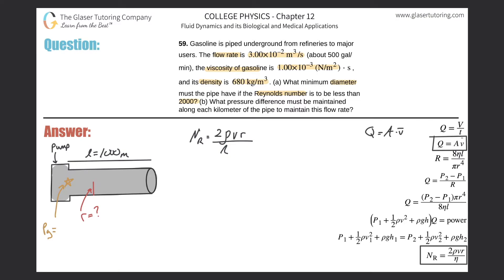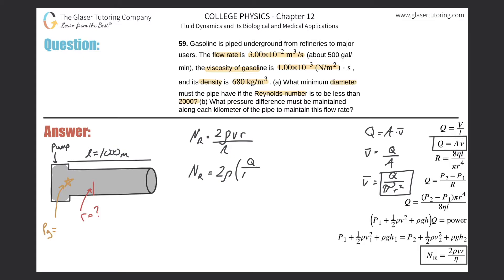So velocity v = Q/A. For a cylindrical pipe, A = πr², so v = Q/(πr²). Substituting this into the Reynolds number equation: Re = 2ρ·(Q/πr²)·r / η. Lo and behold, one factor of r cancels.